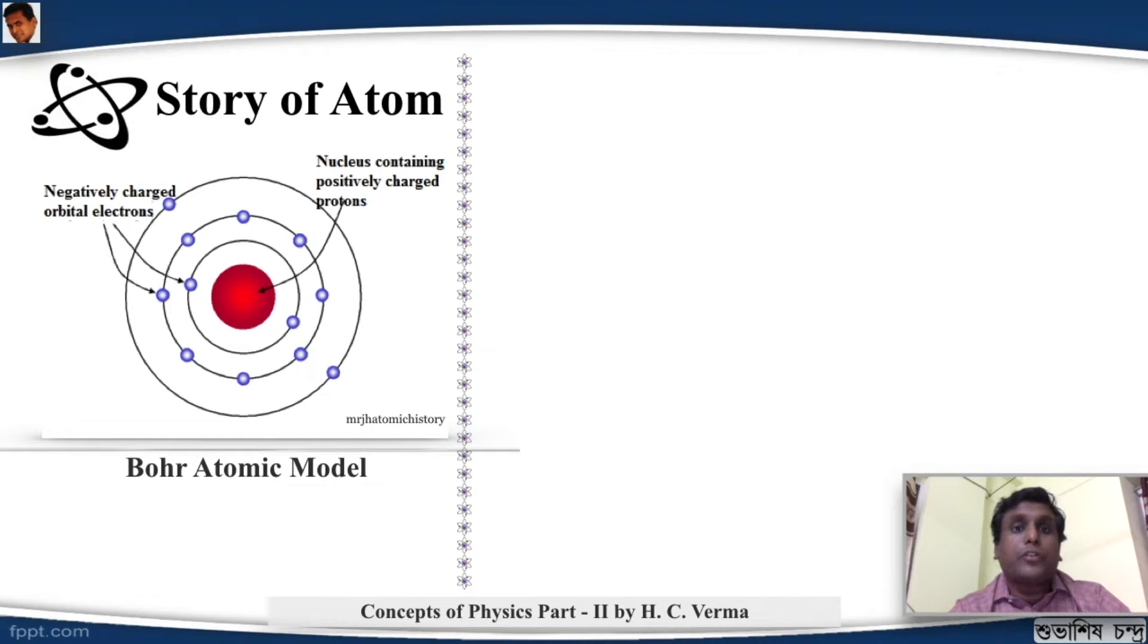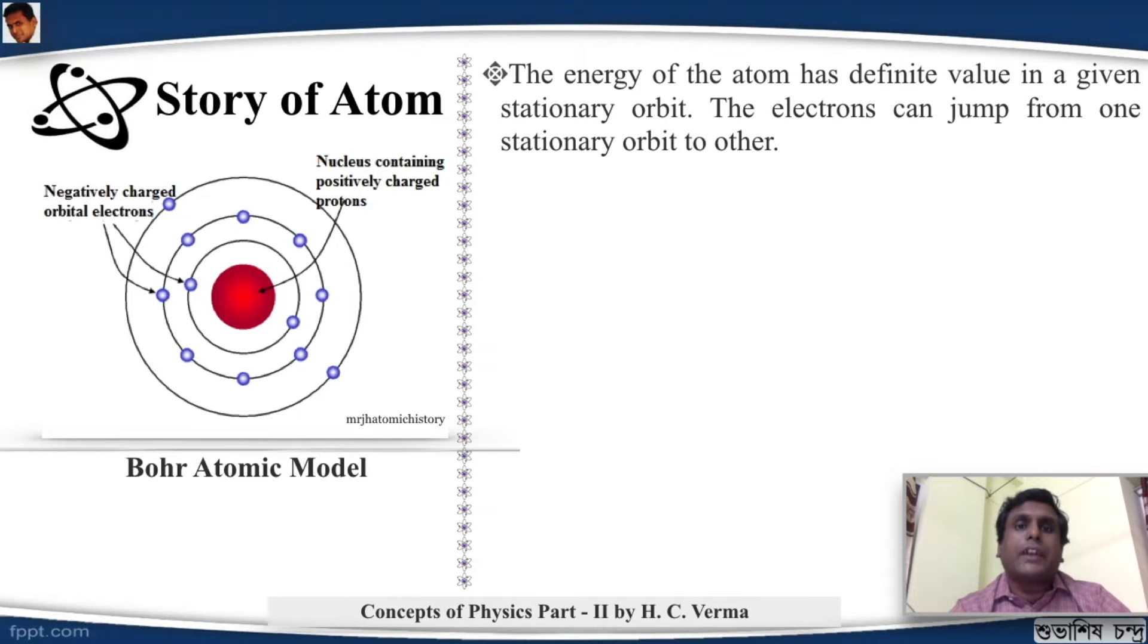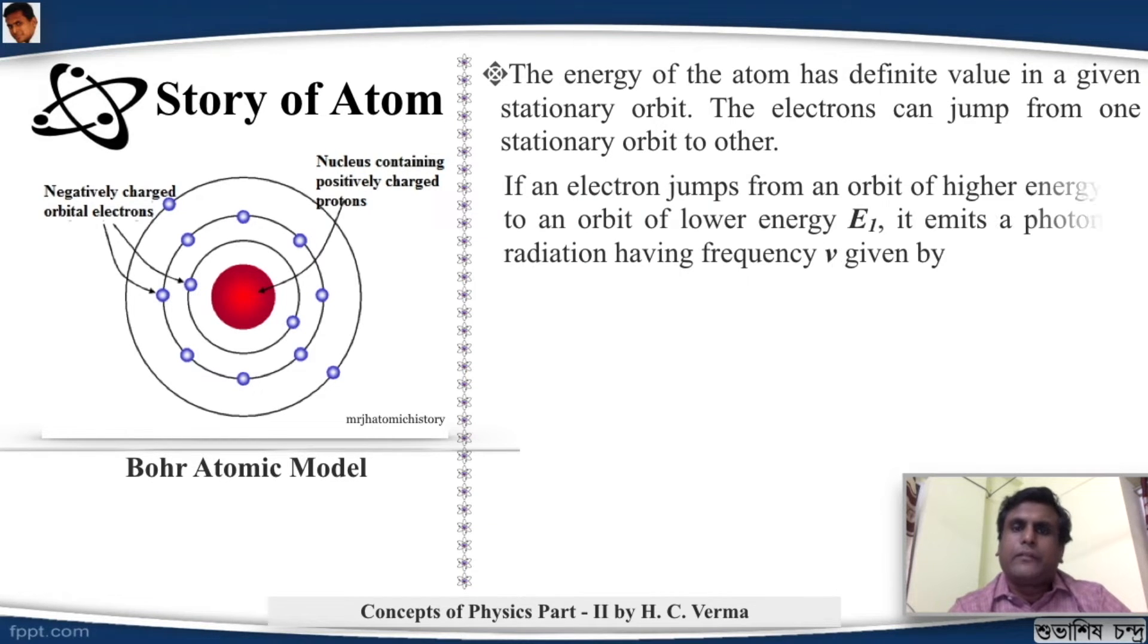Next, the third postulate was the energy of the atom has definite value in a given stationary orbit. The electrons are allowed to jump from one stationary orbit to another. If an electron jumps from an orbit of higher energy E2 to an orbit of lower energy E1, it will emit a photon of radiation having frequency nu which is given by this equation. The famous equation you must have seen.